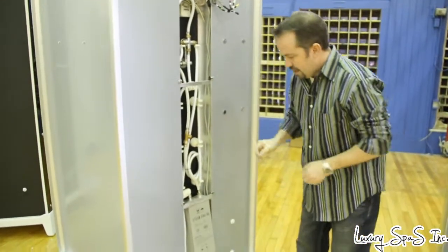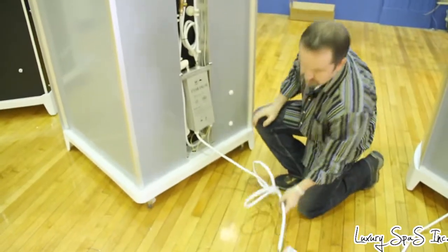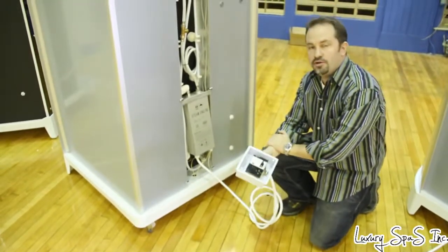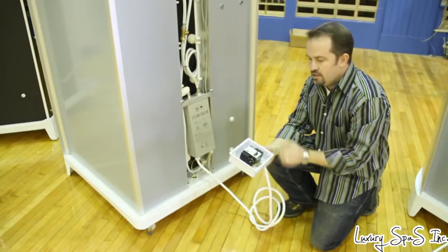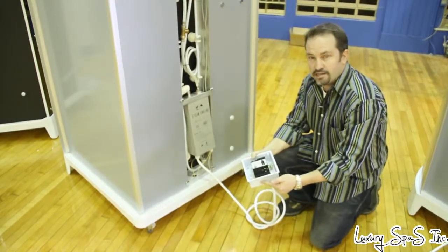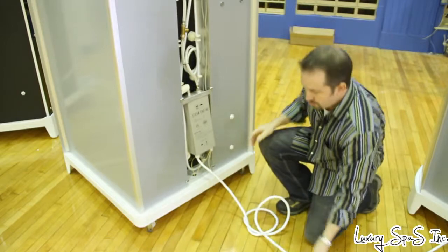What you're going to do is hook it up to 110 volt 30 amp dedicated line. Your incoming line will be connected right at this box and this supplies the whole steam shower.